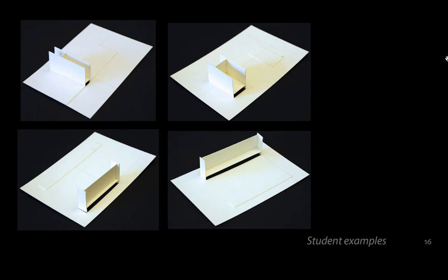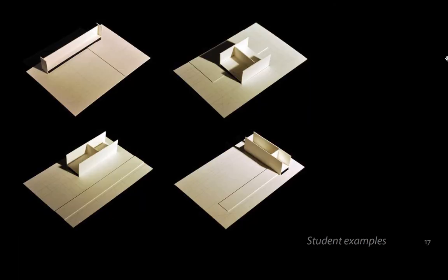These are student examples, also available on Canvas if you look at the assignment. Each of these figures is composed of three vertical planes — two dominant planes and then one that runs perpendicular to those. It is up to you which ones you choose. In the top left example, the two dominant planes are on the short ends of the figure and the perpendicular plane runs in the longest direction.